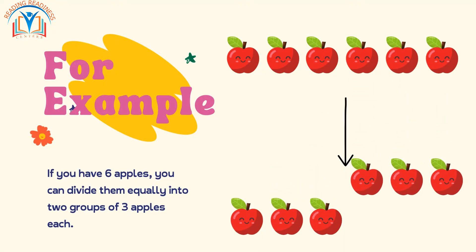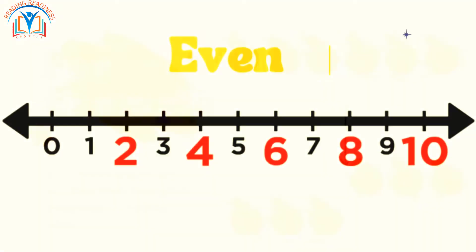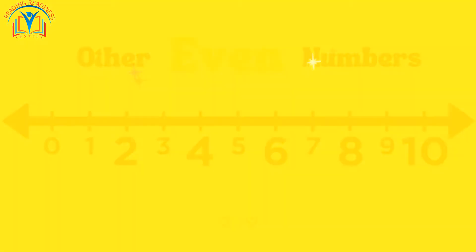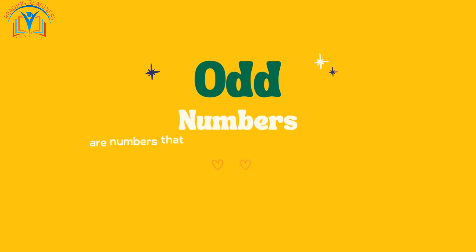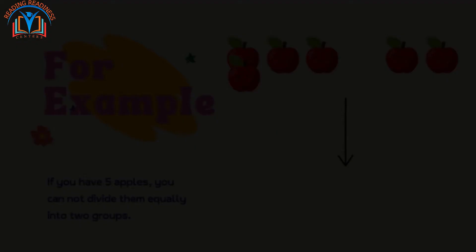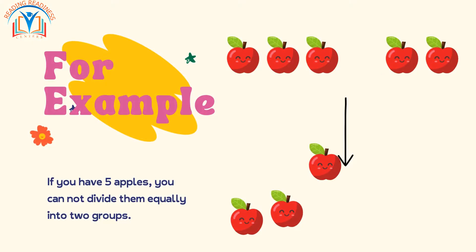So six is an even number. Other even numbers are two, four, six, eight, ten, and so on. Odd numbers are numbers that cannot be divided equally into two groups.